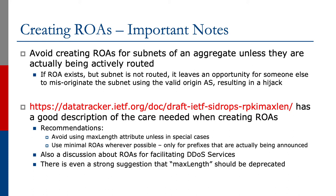In fact, there's an IETF draft at the time of this recording which discusses some of the issues and care needed when creating ROAs. Looking at this internet draft, which is work in progress, some of the recommendations include avoiding using the max length attribute unless in special cases. Their advice also is to use minimal ROAs wherever possible — in other words, create a ROA only for the prefixes that are actually being announced. There's also discussion about ROAs for facilitating DDoS services, where a third party originates subnets subject to DDoS from their own autonomous system. There's even a strong suggestion by the authors that max length should be deprecated.